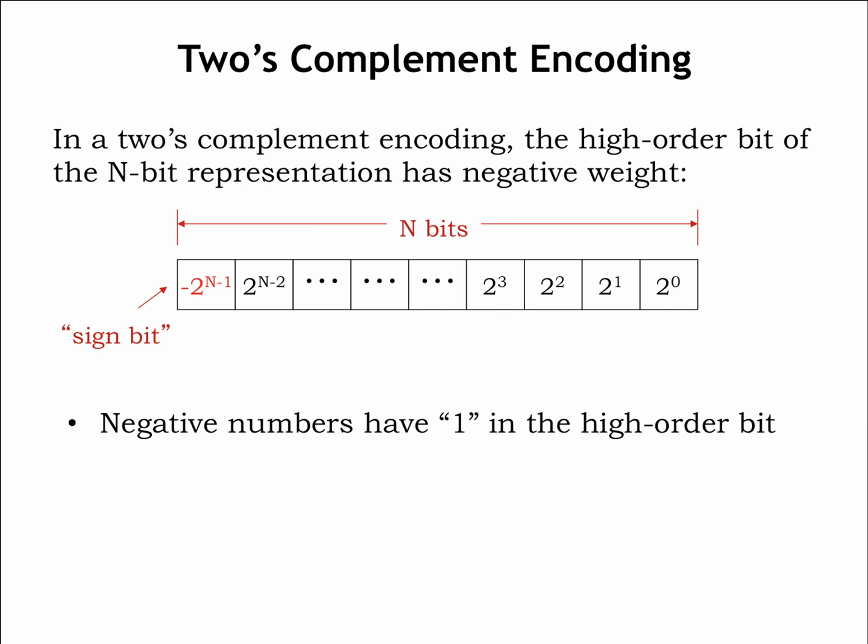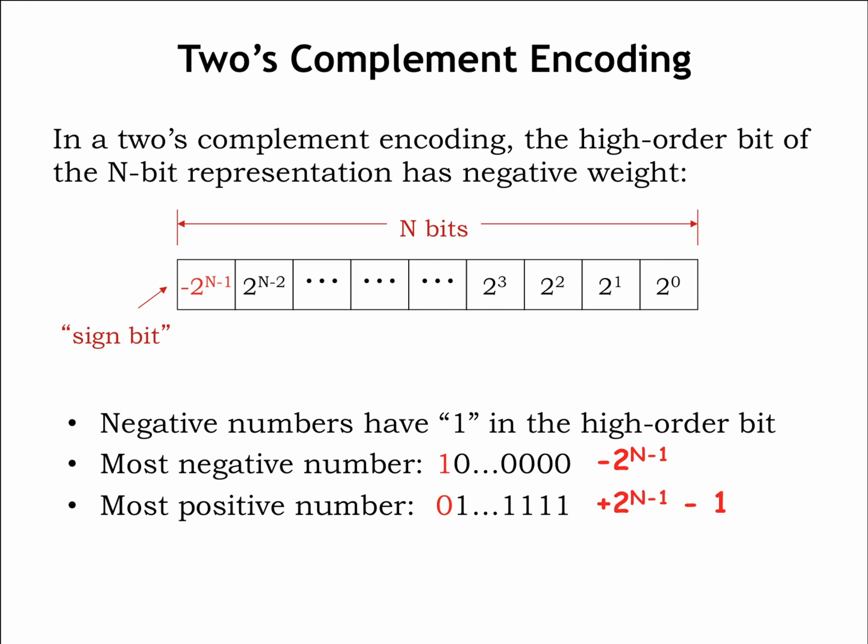The most negative n-bit number has a 1-bit in the higher-order position, representing the value minus 2 to the n minus 1. The most positive n-bit number has a 0 in the negative weight higher-order bit and 1's for all the positive weight bits, representing the value 2 to the n minus 1 minus 1. This gives us the range of possible values.